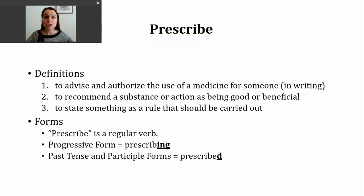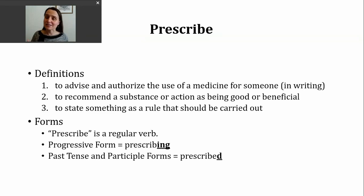You should know that prescribe is a regular verb. To make the progressive tense, we're going to drop the E and then add ING to form prescribing. The past tense and participle forms are made by just adding the letter D, since this verb already ends in an E. The base verb prescribe ends in a B sound, so our ED is going to make a D sound: prescribed, prescribed.